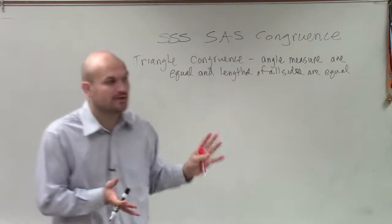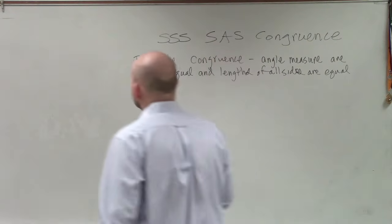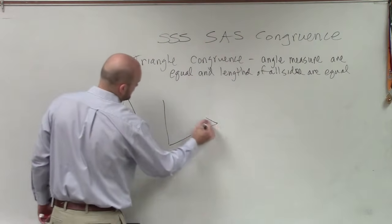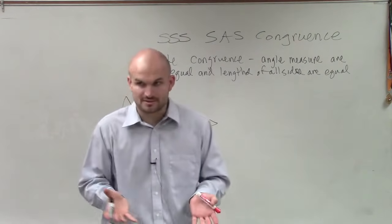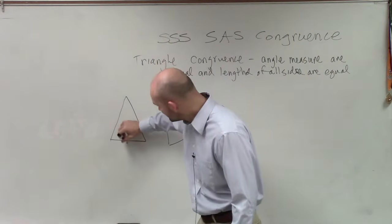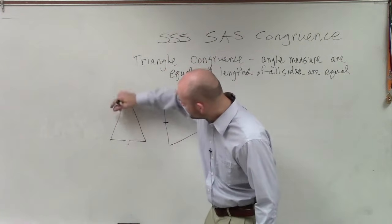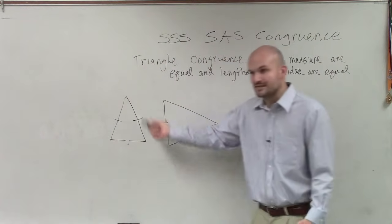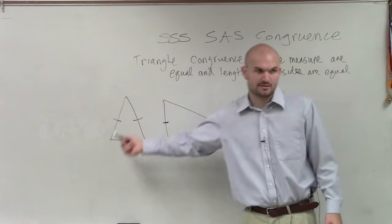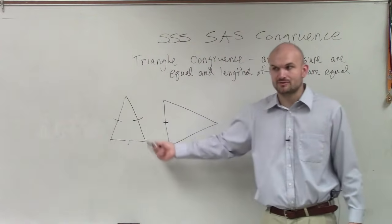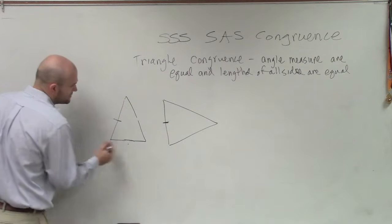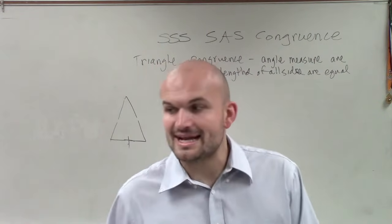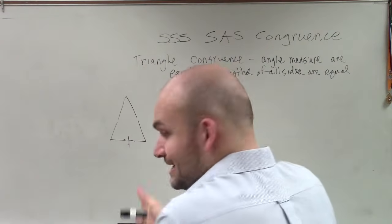So there are two ways that we're going to be able to show that triangles are congruent. The first way is what we call Side-Side-Side, or SSS. SSS tells us that if we have two triangles, and we apply tick marks — like we did with isosceles triangles — one tick mark means that length is equal to that length. So if I have these two triangles, and I say that length is equal to that length, that side is equal to that side.